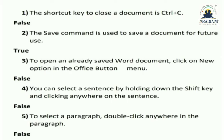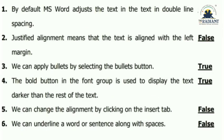Number five: to select a paragraph, double-click anywhere in the paragraph. To select a line you have to place the cursor at a particular position — like at the beginning of the line — then the whole line gets selected. So clicking anywhere will not work, so it is false.